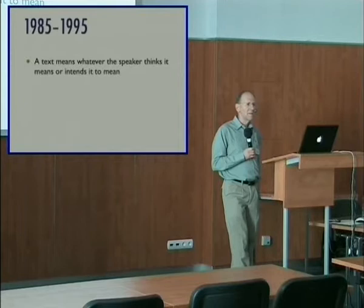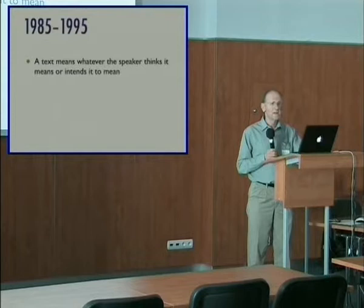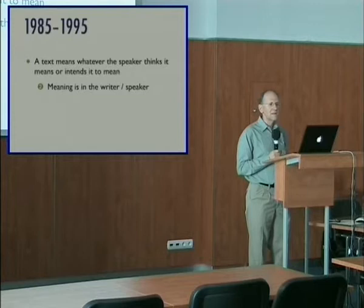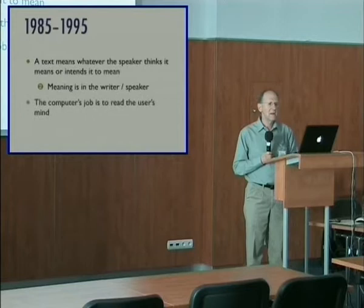So, in this era, the implicit attitude was that a text means whatever its speaker or writer wants it to mean, regardless of its literal meaning — and so this is our second view of the locus of text-meaning: meaning is in the writer or in the speaker. The overarching problem of computational linguistics in this era was seen as developing computer systems that can read the user's mind.